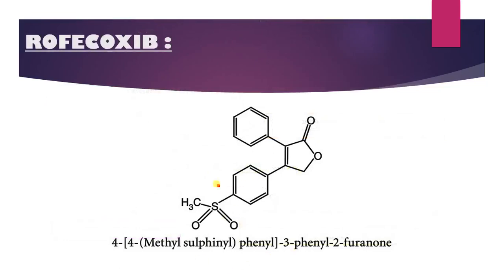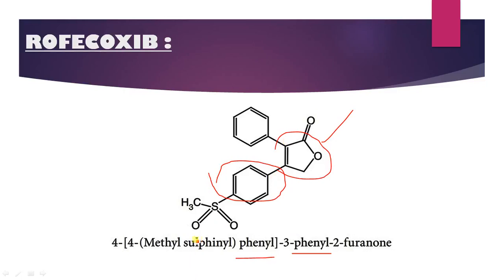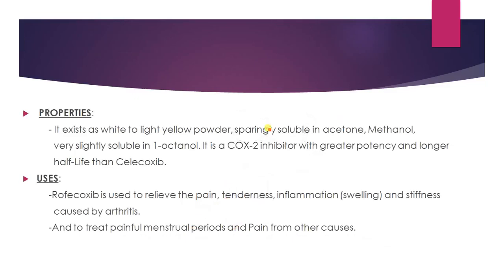The next compound is rofecoxib, which contains a furanone ring. It is 3-phenyl-4-(4-methylsulfonylphenyl)-2(3H)-furanone: this is the furanone (furan-one), 3-phenyl, and position 4 is substituted with 4-methylsulfonylphenyl. Properties: slight yellow powder, sparingly soluble in acetone and methanol. Rofecoxib is used to relieve pain, tenderness, inflammation and stiffness caused by arthritis.